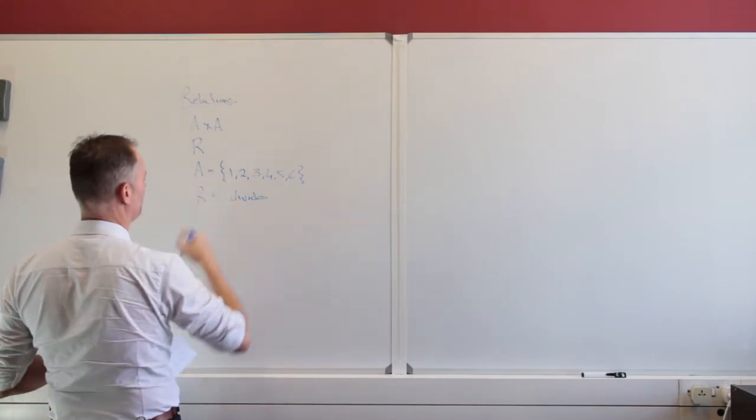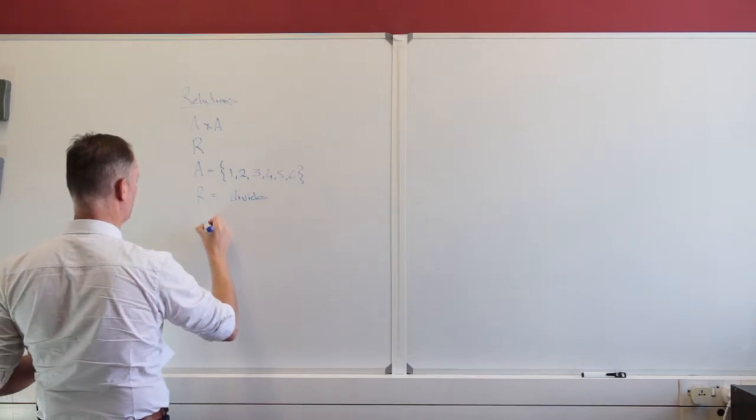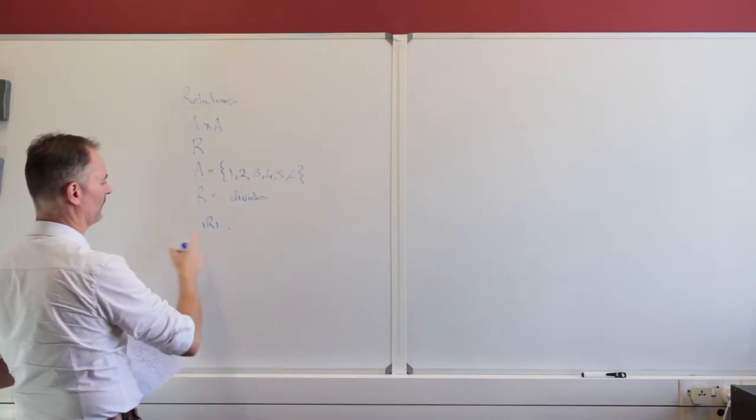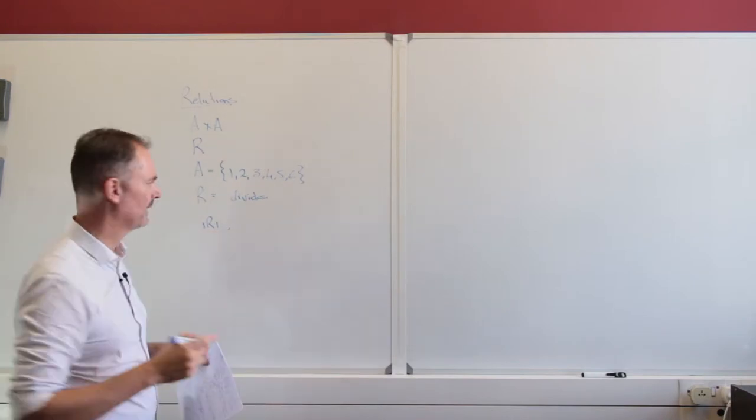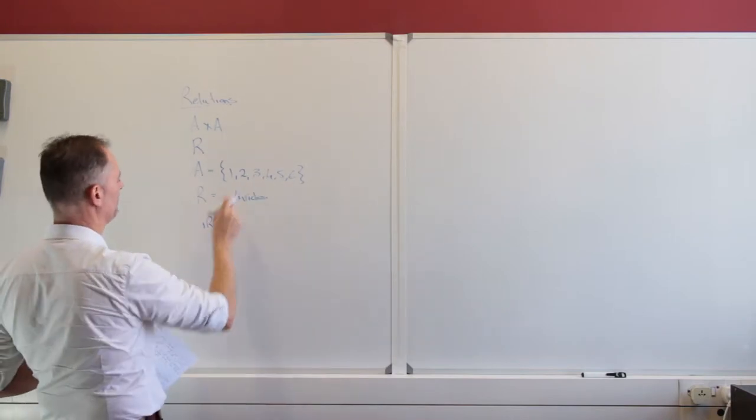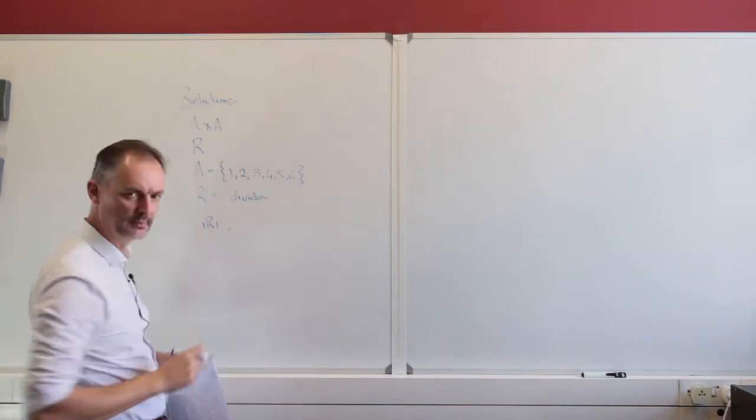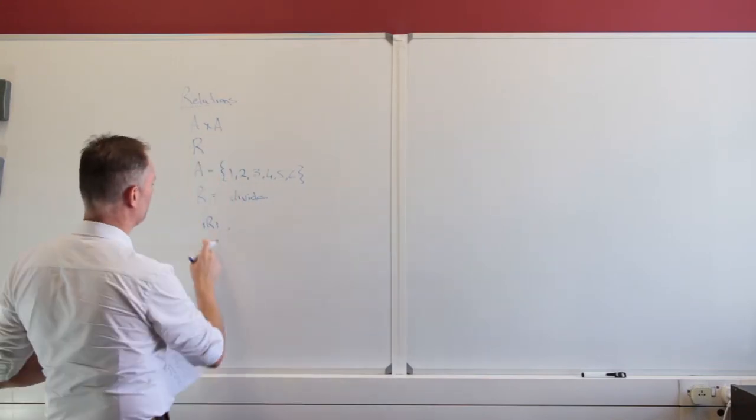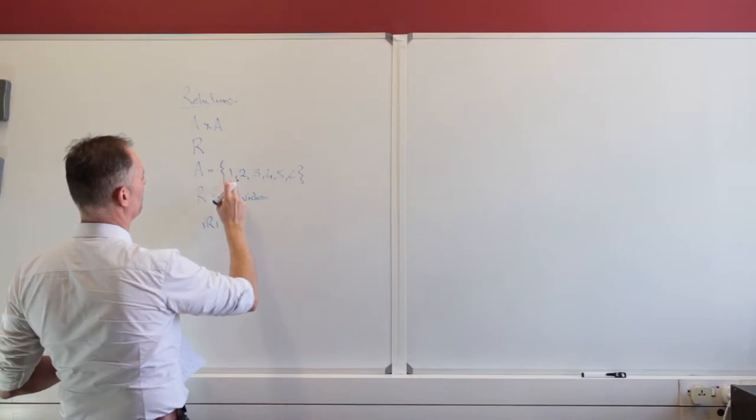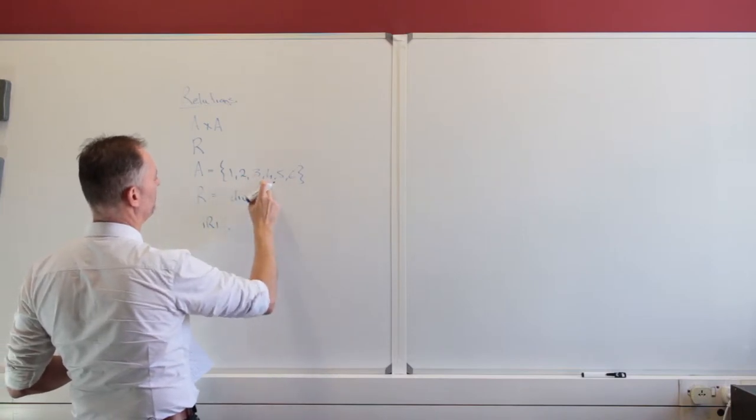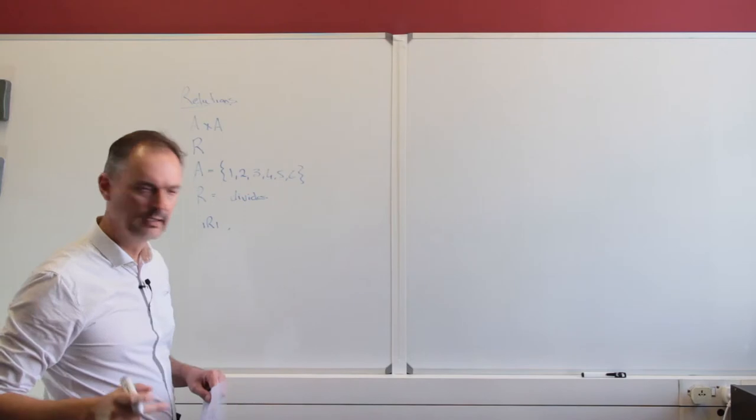Does 1 divide itself? Indeed it does. So 1 divides 1. Now they are both in the set. It is a product set, and we can use product set notation that we used before. Does 1 divide 2? It does not divide 3, 4, 5 or 6 without a remainder.